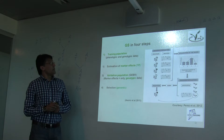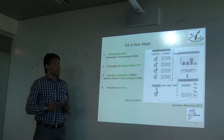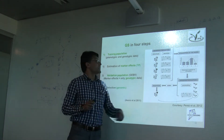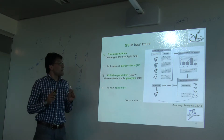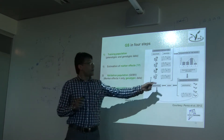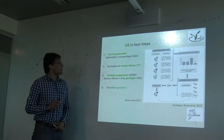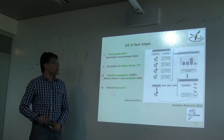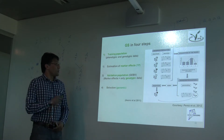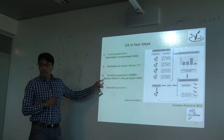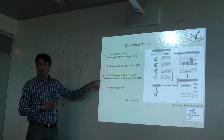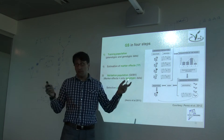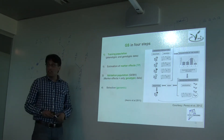Genomic selection can be executed in four basic steps. We have a training population where we have both phenotypic and genotypic data, and then we estimate marker effects in the training population using both types of data. Then we come to the breeding population or validation population, where we use the marker effects and genotypic data — we don't use phenotypic data here, only the marker effects and SNP data — and then we proceed with genomic selection.